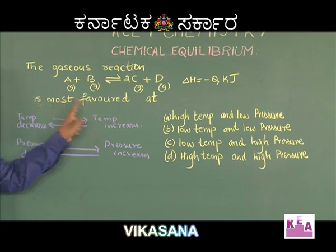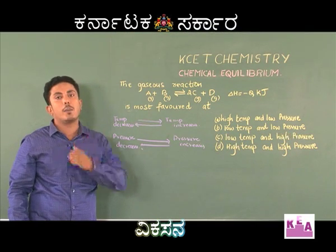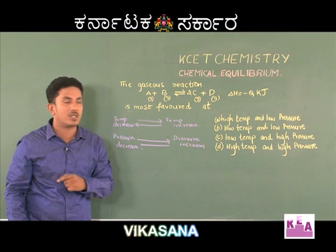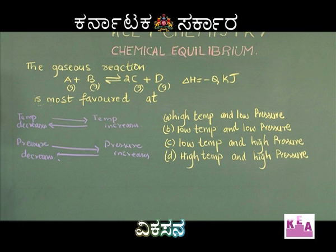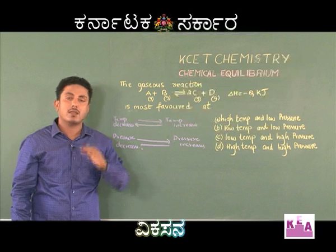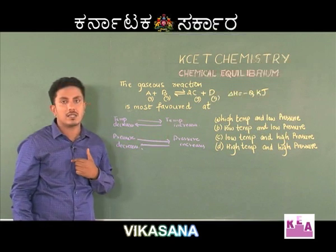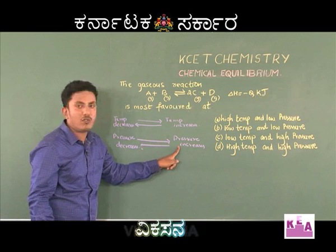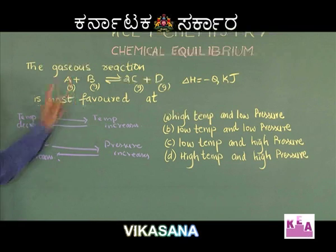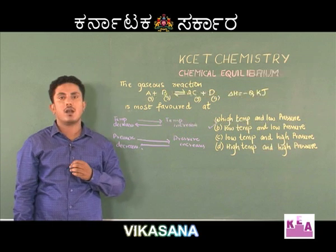The question asks when the forward reaction is most favored. If you maintain low temperature, the system tries to increase the temperature and the reaction takes place in the forward direction. If you maintain low pressure, the system will try to increase the pressure and the equilibrium shifts in the forward direction. Hence for this gases reaction, low temperature and low pressure are required. Therefore option B is the right answer.